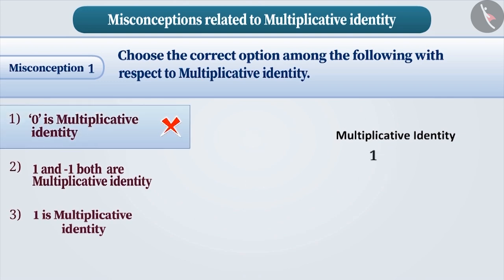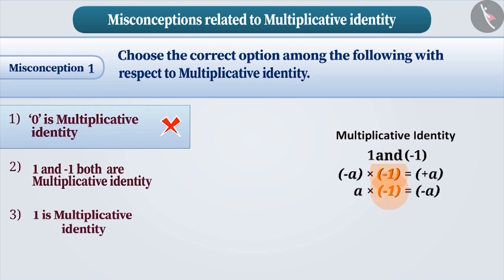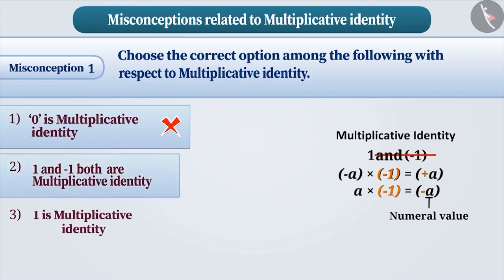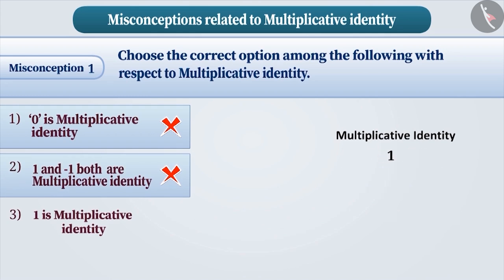Similarly, minus 1 is also considered as multiplicative identity along with 1. Children ignore the fact that the sign of the number changes when multiplied with minus 1. Only on the basis of the numeral value, they understand that minus 1 is also a multiplicative identity. This is an incorrect understanding. Therefore, option 2 is incorrect.